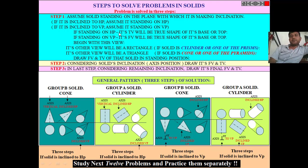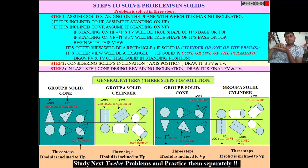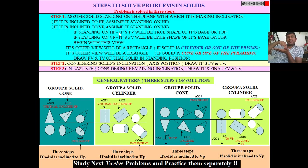If the solid is standing on HP, then its top view will be the true shape of its base. For example, if a cone is standing on the horizontal plane, its axis is perpendicular to the horizontal plane. Looking from the top, the top view will be the true shape of the base — a circle with the radius of the base of the cone.